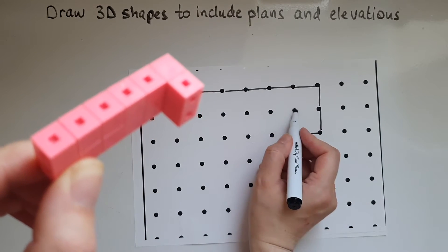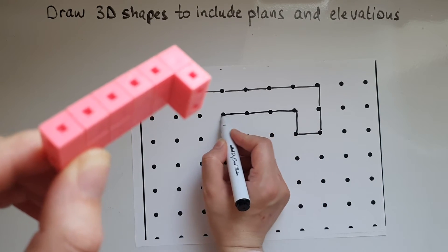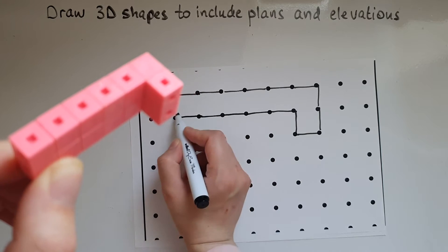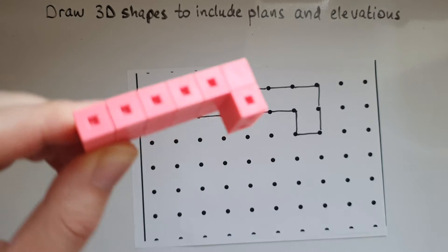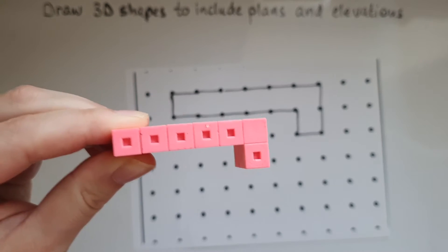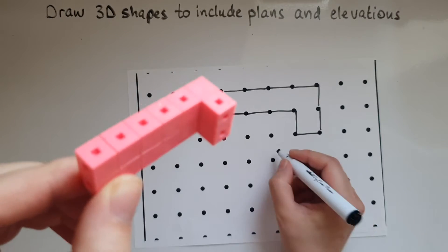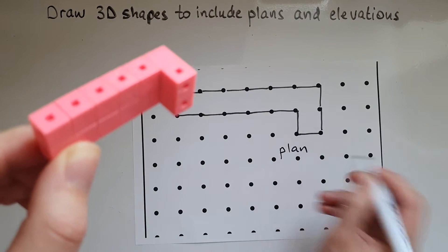One up, then five across and one up. So this is what you see if you turn it this way. This is called the plan for this shape.